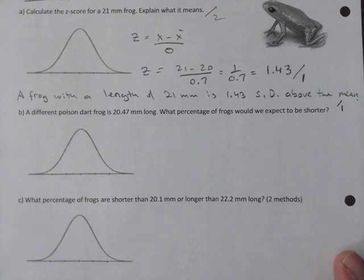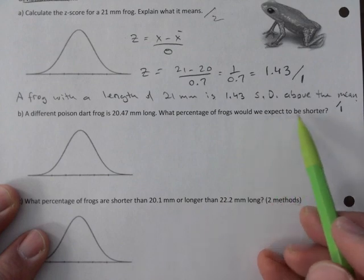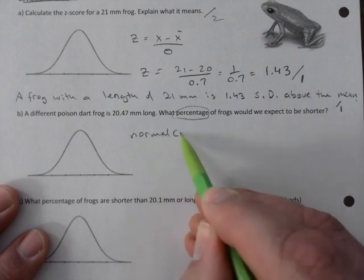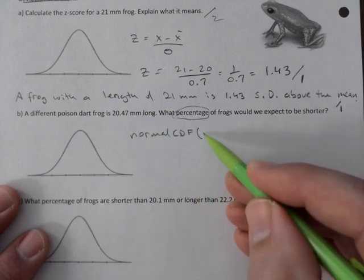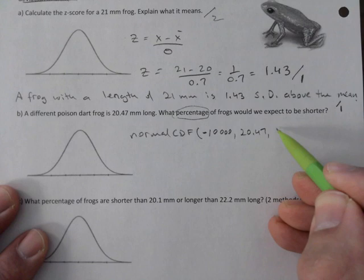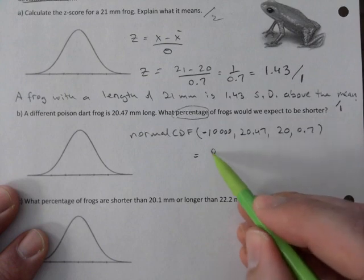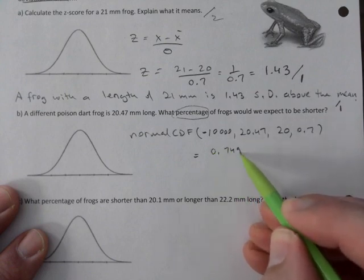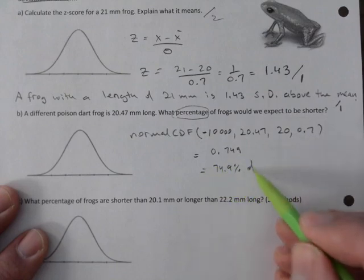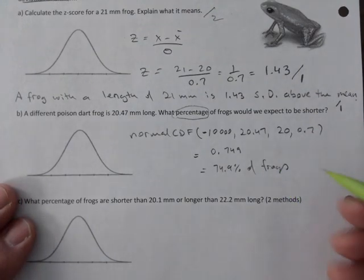If a different poison dart frog is this long, what percentage of frogs would we expect to be shorter? What percentage, so it's normal CDF, and just put in a really small number here, so minus 10,000 will do, and 20.47, and this is 20 and 0.7 like that. You get 0.749, and that's 74.9% of frogs. So, one mark for that.